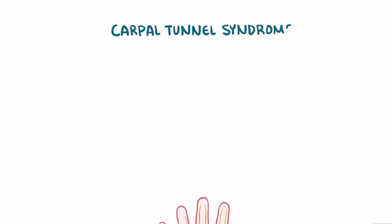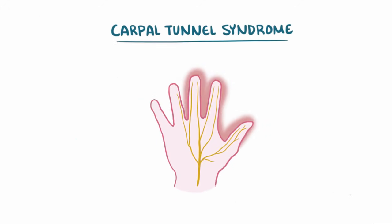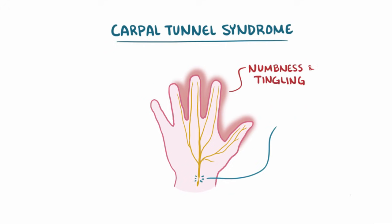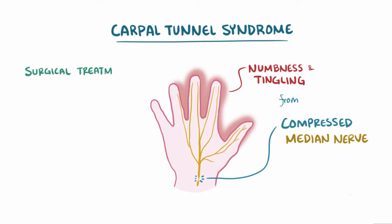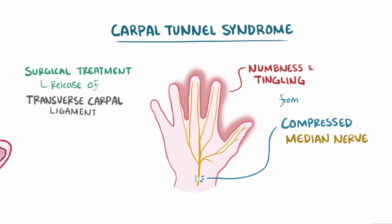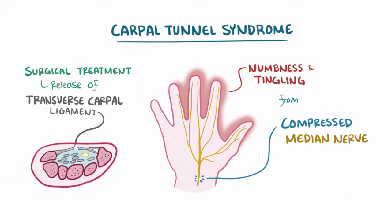As a quick recap, carpal tunnel syndrome is a condition most often characterized by numbness and tingling in the hand caused by a compressed median nerve in the wrist, and if necessary can be surgically treated by release of the transverse carpal ligament which forms the roof of the carpal tunnel.